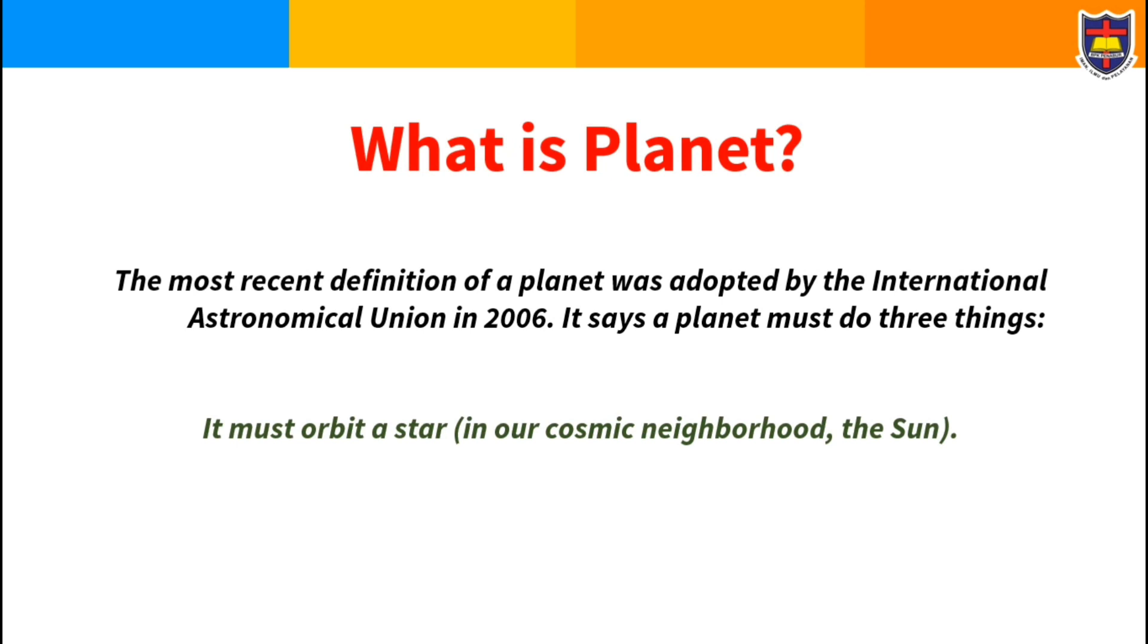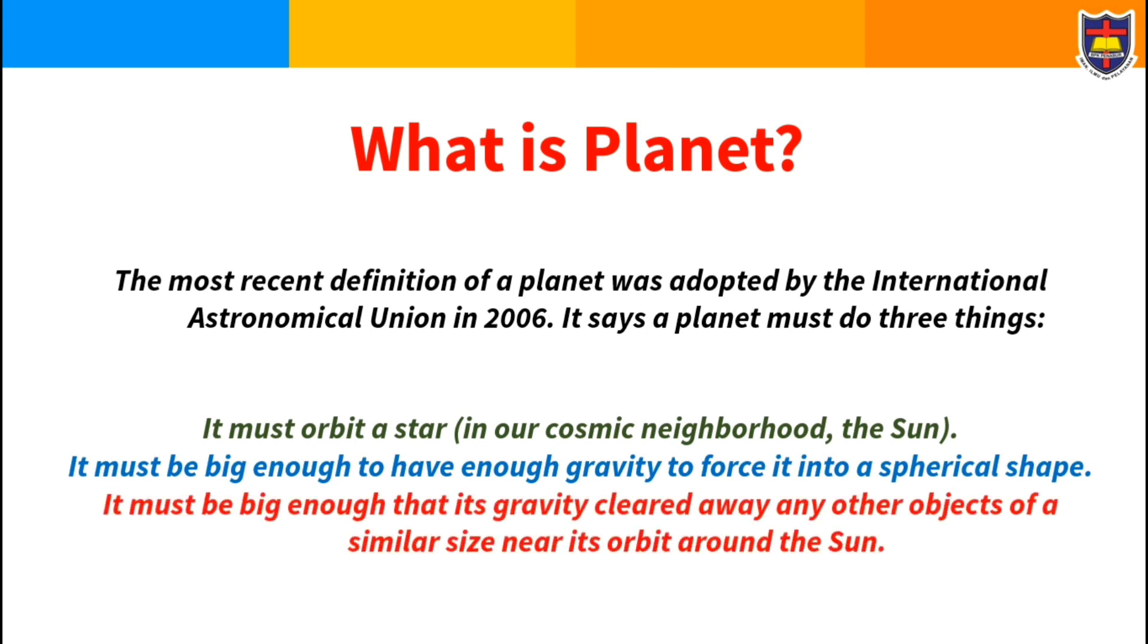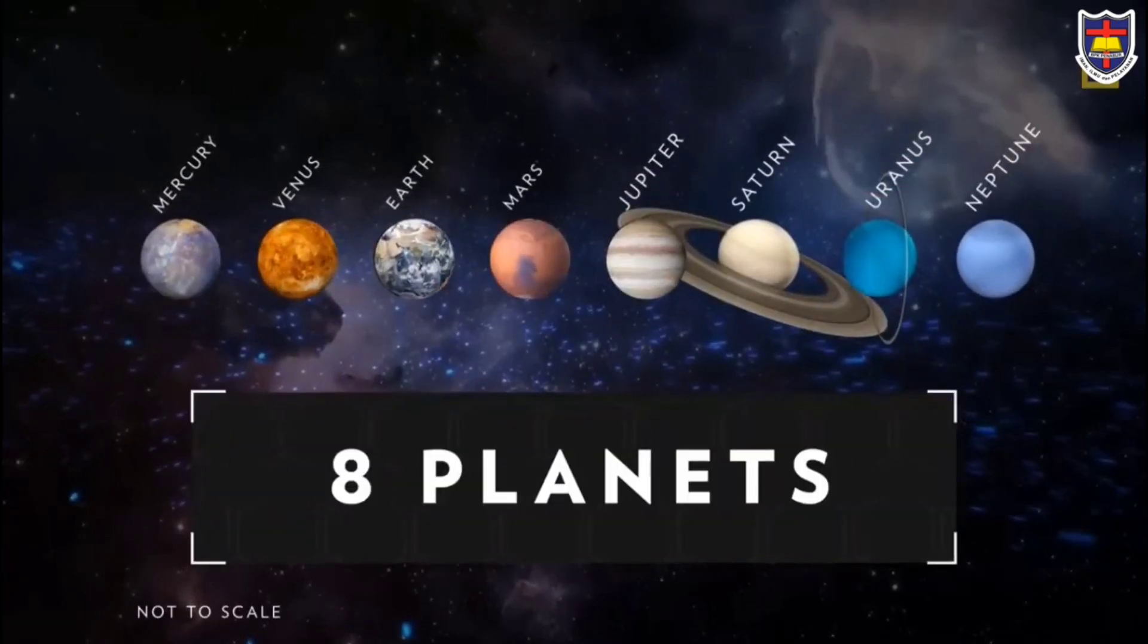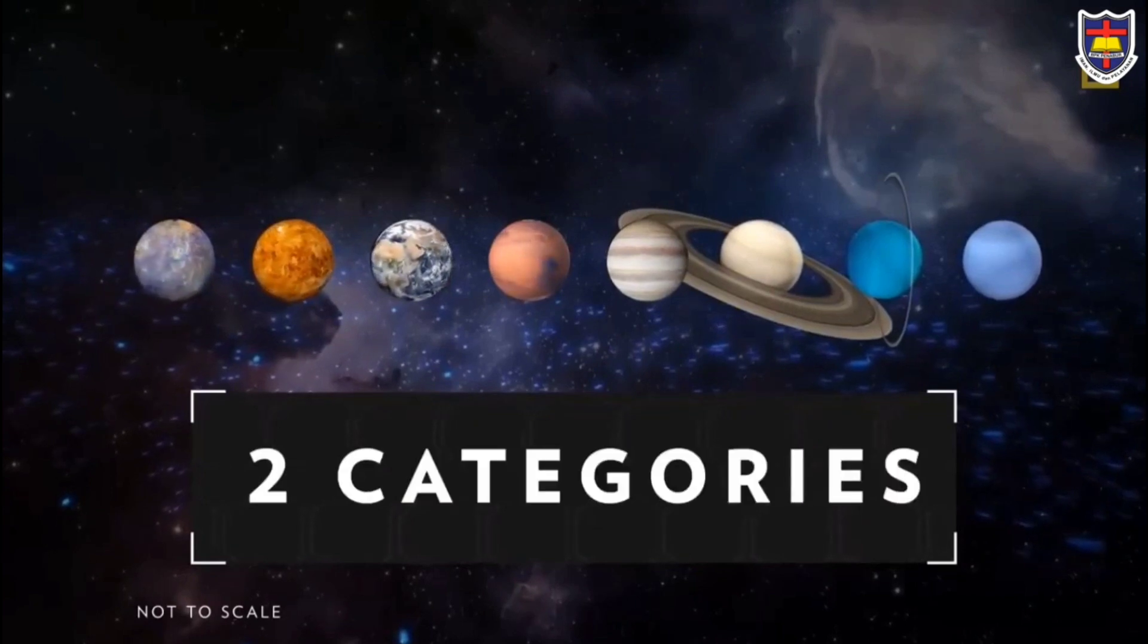First, it must orbit a star. In our cosmic neighborhood, the Sun. Second, it must be big enough to have enough gravity to force it into a spherical shape. Third, it must be big enough that its gravity clears away any objects of similar size near its orbit around the Sun.